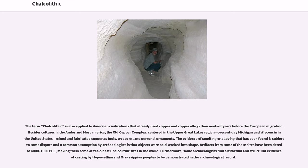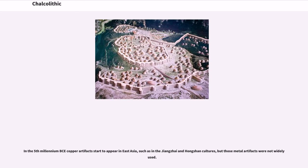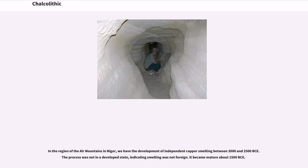Some archaeologists find evidence of casting by Hopewellian and Mississippian peoples in the archaeological record. In the 5th millennium BCE, copper artifacts began to appear in East Asia, such as in the Jiangzhai and Hongshan cultures, though these metal artifacts were not widespread. In the region of the Aïr Mountains in Niger, independent copper smelting developed between 3,000 and 2,500 BCE. The process was not fully developed initially, indicating smelting was locally invented, and became mature around 1,500 BCE.